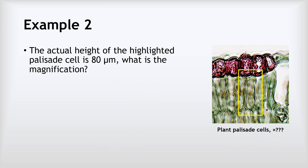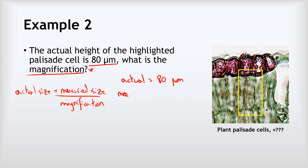Example two. In this one we're going to have to work backwards a little bit. We're told that the actual height of the highlighted palisade cell is 80 micrometers and we're being asked to find what is the magnification. Now to start, it's always helpful to write out the equation that you're going to use because that can help you to see what you need to do. So in this case, our equation is actual size equals the measured size divided by the magnification. And the measured size, similar to the last example, we're going to need to break out our ruler again. And if we do that, it's this cell here that we're measuring. If we do that, we find that that cell is 40 millimeters on our image.